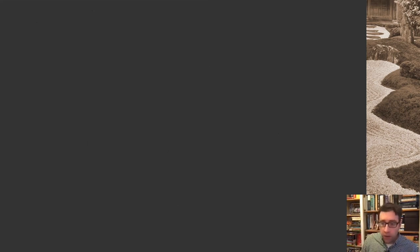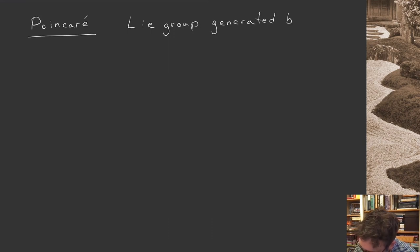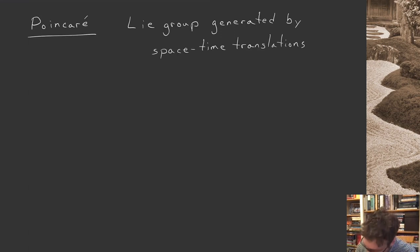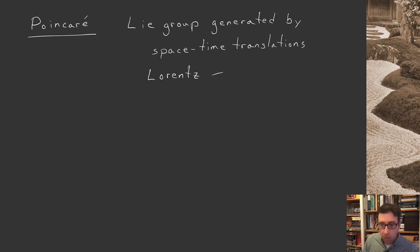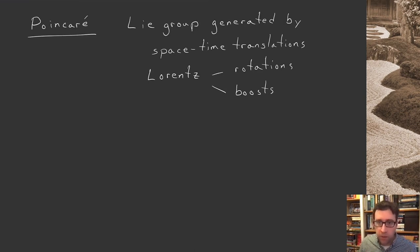Let's get started with Poincaré. Poincaré is a Lie group — a continuous symmetry group — generated by elements you should be familiar with at this point. It's generated by spacetime translations and also by the elements of the Lorentz group, which consists of spatial rotations and Lorentz boosts. Those are the three sets of elements; they are also the symmetries of special relativity and of relativistic quantum field theories.